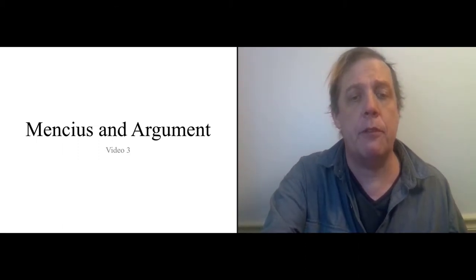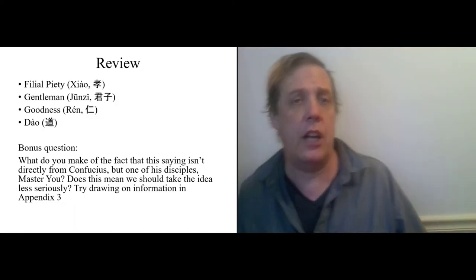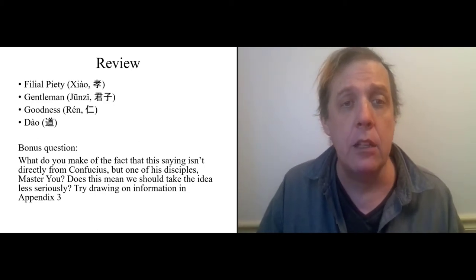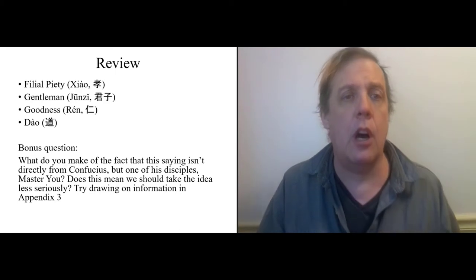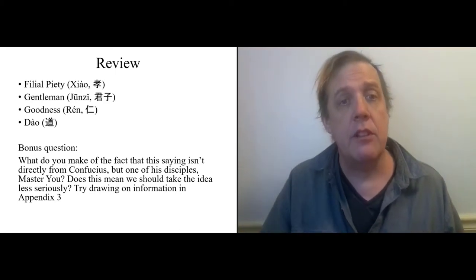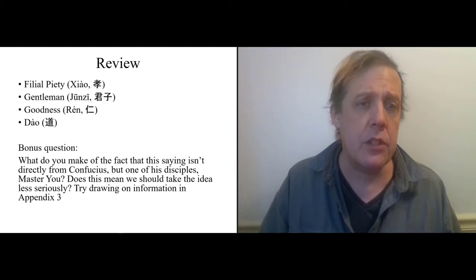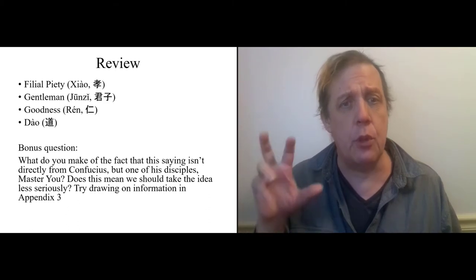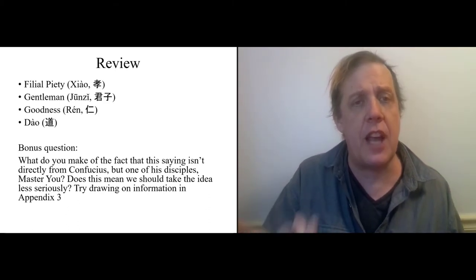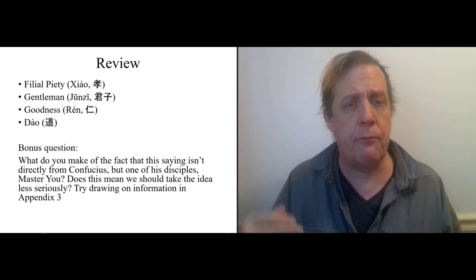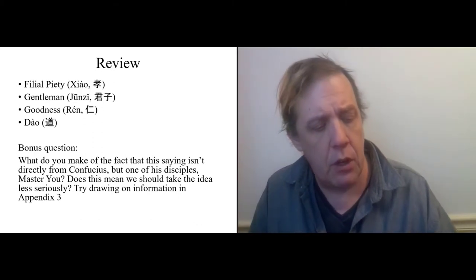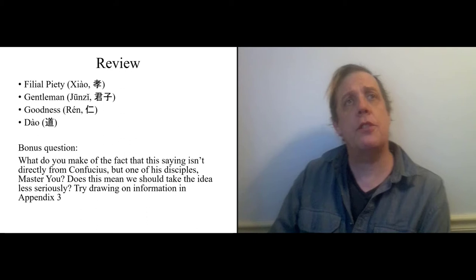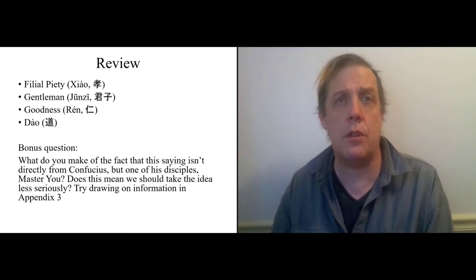But first just a bit of review. In the last video and exercise we talked about four crucial Confucian terms: filial piety which means respect for your parents, the idea of a gentleman, the idea of goodness or benevolence and the idea of Tao. And we did this all through the lens of the second saying in the first book of the Analects. So I want to take a second to talk more about understanding Confucius through these terms.